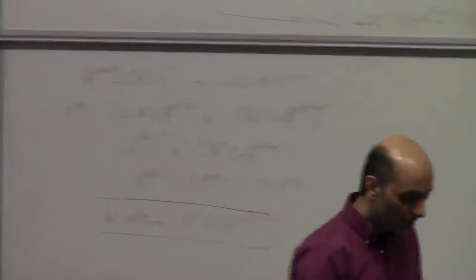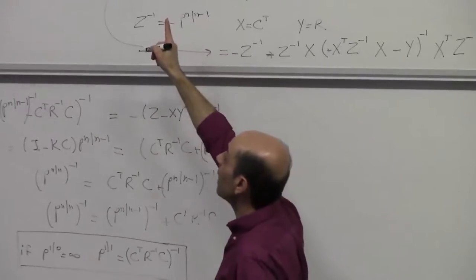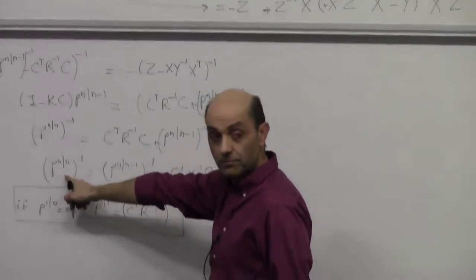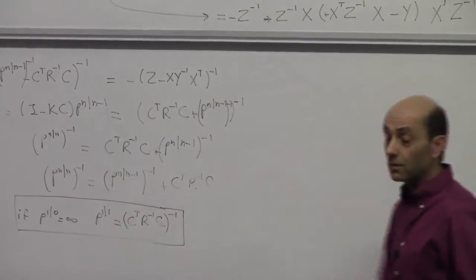All we've done so far is to show that if we have no information to begin with — infinite uncertainty — we can still compute our posterior uncertainty. Now the second step is to take the Kalman gain as written in terms of the prior uncertainty, and rewrite it in terms of the posterior uncertainty, which we can do.